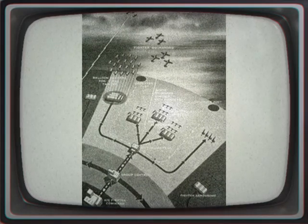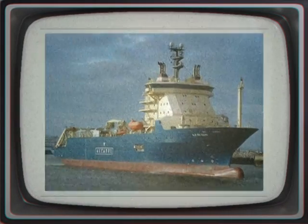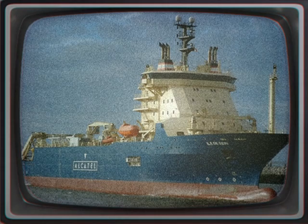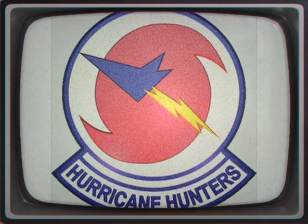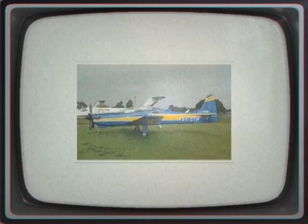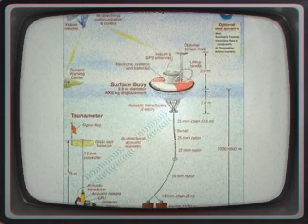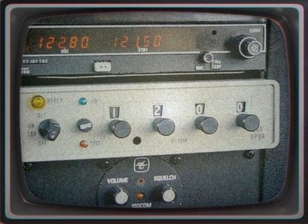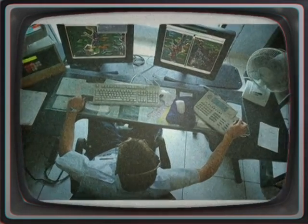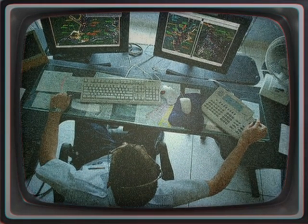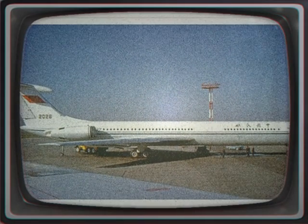Prior to the introduction of data link in aviation, all communication between the aircraft and ground personnel was performed by the flight crew using voice communication, using either VHF or HF voice radios. In many cases, the voice-relayed information involved dedicated radio operators and digital messages sent to an airline teletype system or successor systems. In an effort to reduce crew workload and improve data integrity, the engineering department at ARINC introduced the ACARS system in July 1978.